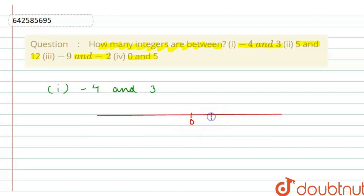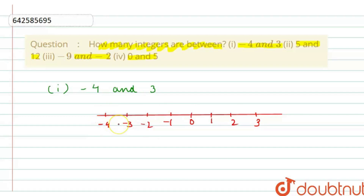So I'm writing here 1, 2, 3 and here minus 1, minus 2, minus 3 and minus 4, and likewise it proceeds up to infinity both ways. We have to find out the number of integers between minus 4 and 3. So this is minus 4 and this is 3.